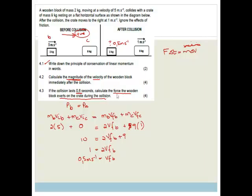It says calculate the force the wooden block exerts on the crate. So I am going to choose the wooden block. So we want F. The time is 0.6. The mass of the wooden block is 2. And remember, delta V is VF minus VI. So that is going to be 0.5 minus 5. So therefore, F is going to be 2 times minus 4.5 all over 0.6.